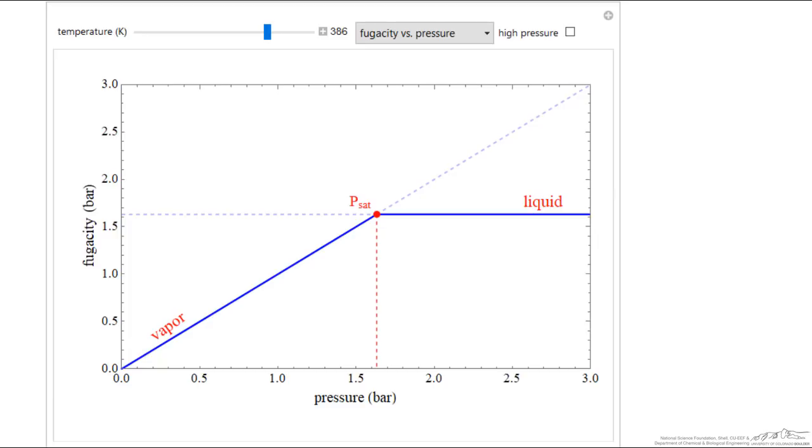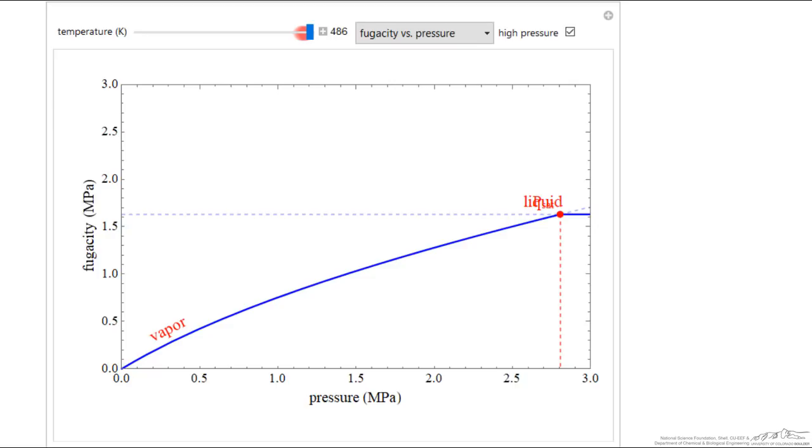The other thing that this simulation tries to represent is if we select high pressure, notice we change the y-axis scale. And let me get back on scale here. So as I lower the temperature, you'll notice that the vapor plot is not quite a straight line. We're trying to account here for the fact we have a non-ideal gas. But otherwise, the behavior is the same.